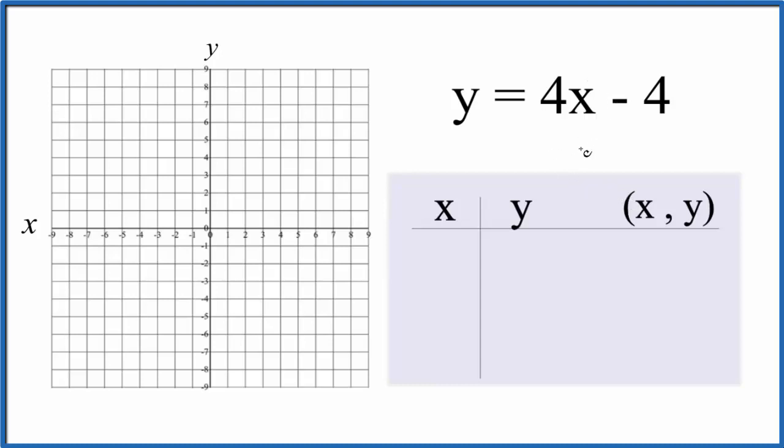So let's put some values in for x here. How about 0? 4 times 0 that's just 0. 0 minus 4 is negative 4.